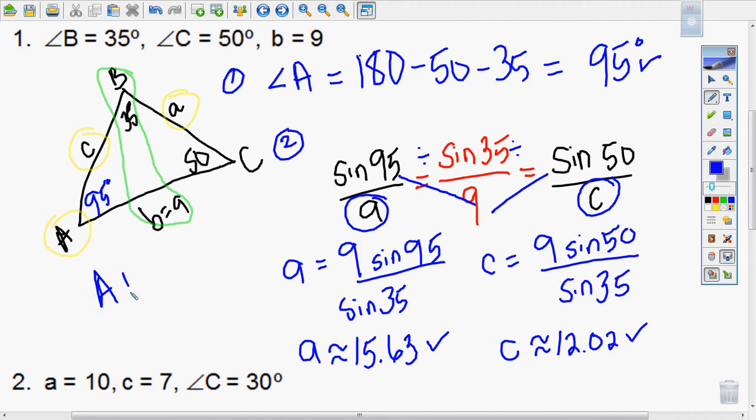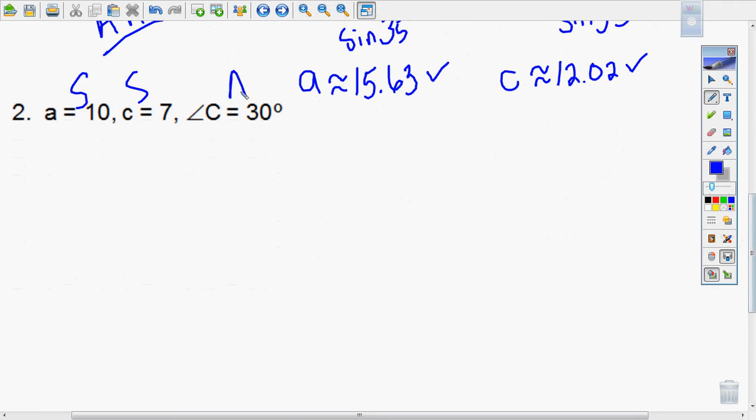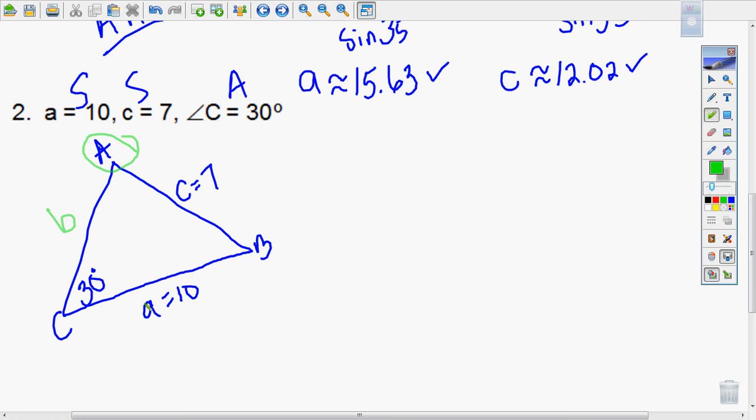This is what happens when you have an angle-angle-side situation. Now let's try a side-side-angle situation. Draw my triangle and label what I have. Side A equals 10, side C equals 7, and angle C equals 30. That means I'm missing angle A, I'm missing side B, and angle B.